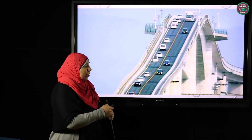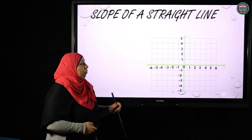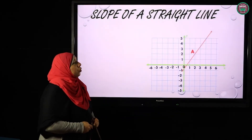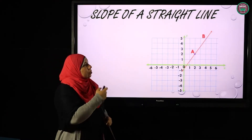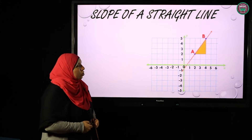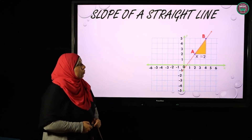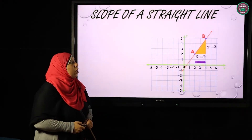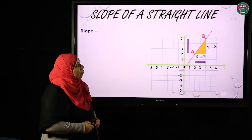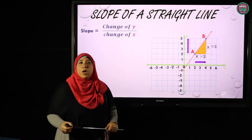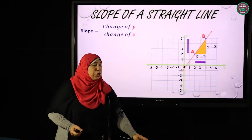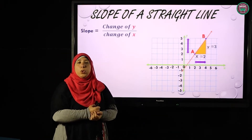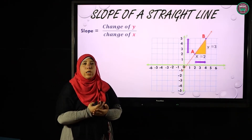What is the slope? The slope of a straight line — if we consider a straight line passing through two points A and B, where A is the ordered pair (2, 2) and B is the ordered pair (4, 5) — the change of X here is 2 units and the change of Y is 3 units. So I can say that the slope is the change of Y over the change of X.